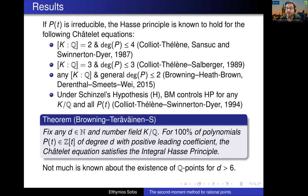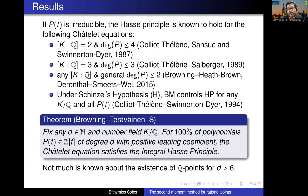You can always complain that we only look at random polynomial equations and don't prove anything for any given equation. But the advantage is that nothing is known for these equations for irreducible polynomials when the degree is like 6, 7, or anything bigger.